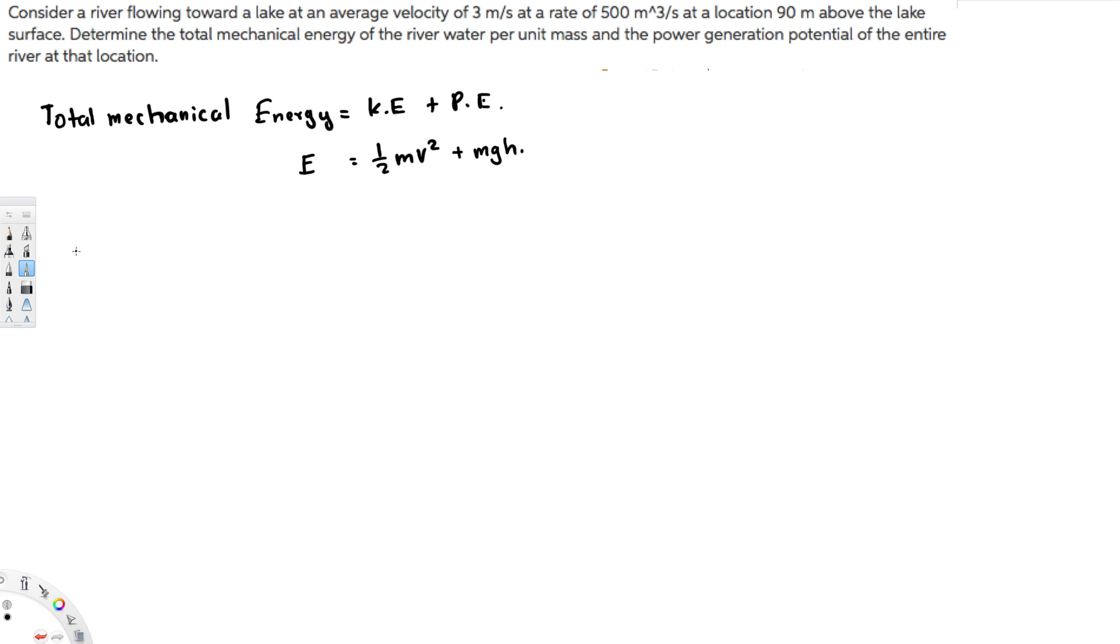If you divide this one by mass, every mass is going to be cancelled. So here we only get half v square plus gh. And that's going to be it. We have the velocity right here and we have height right here.